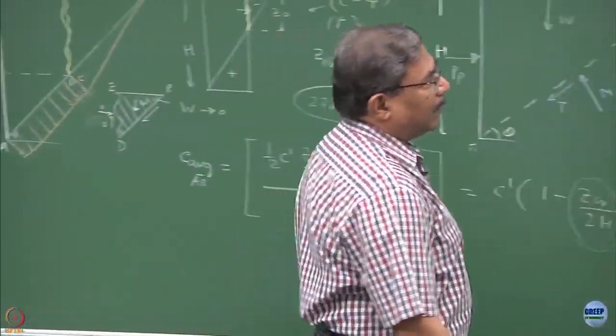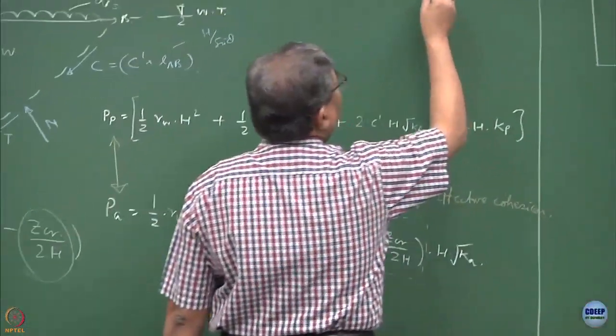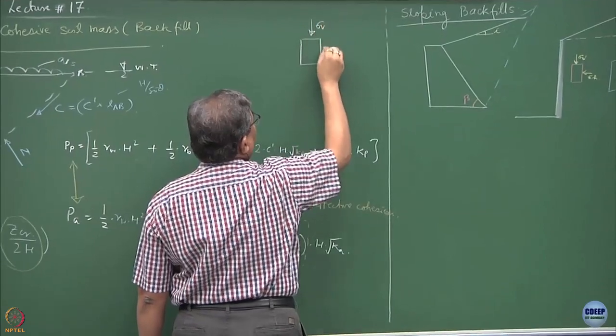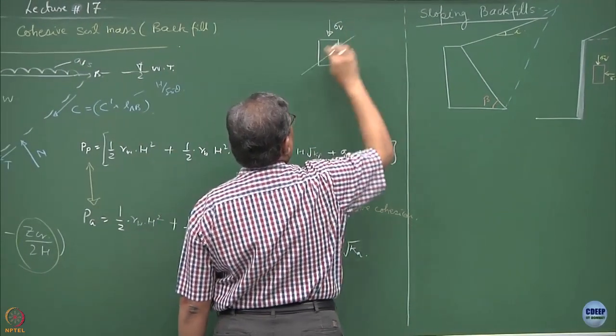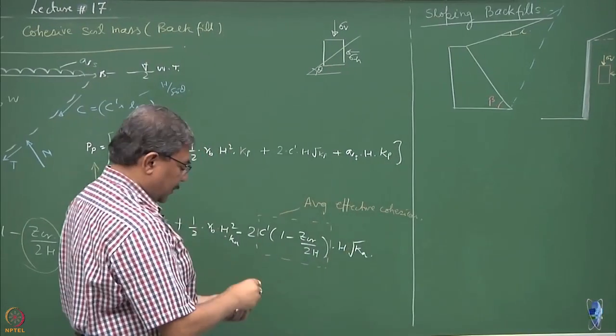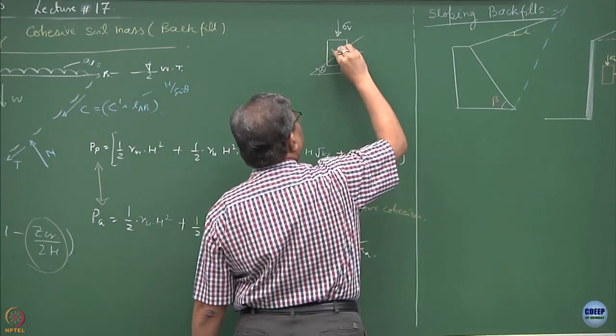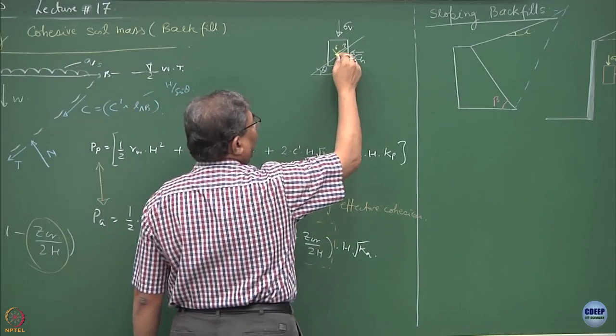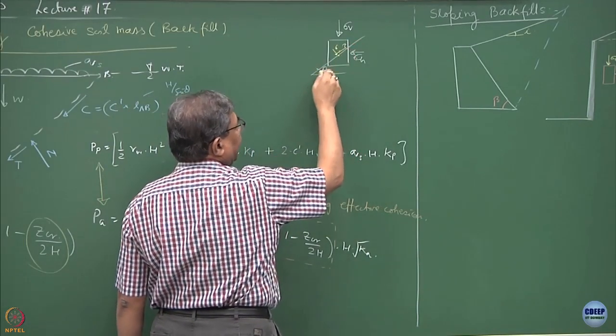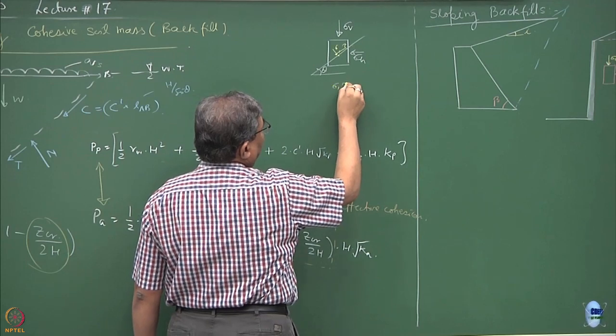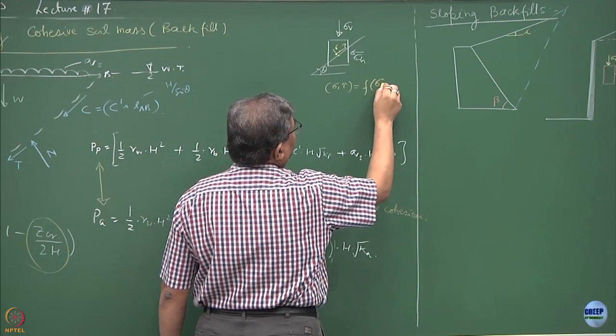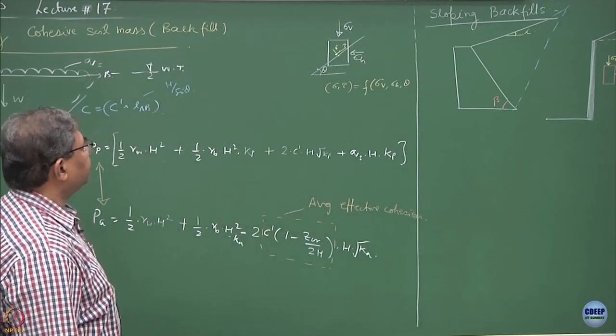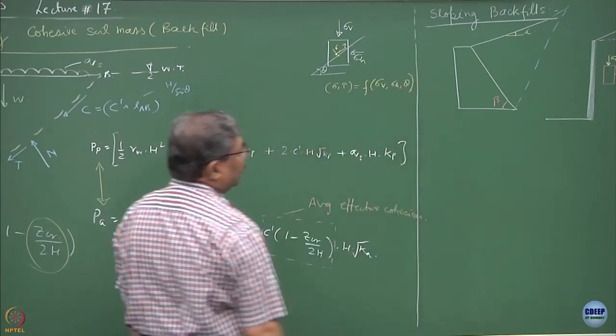Remember, we did several cases for finding out the Mohr circle. If this is the element of the soil, sigma v is known, sigma h is known, this is the inclination plane theta and then you were supposed to find out the state of stress at a point O which is passing through a plane inclined at an angle of theta. So you are supposed to find out sigma tau as a function of sigma v, sigma h, theta. And we did a reverse problem also.